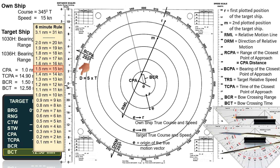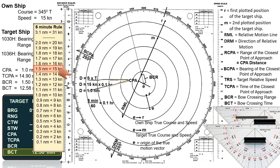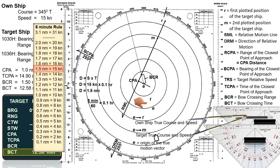Using the six-minute rule, if the ship has a speed of 15 knots, she travels a distance of 1.5 nautical miles in six minutes. You can also use the formula: distance equals speed times time. Own ship speed is 15 knots multiplied by 0.1 hours (six minutes), giving a distance of 1.5 nautical miles. The six-minute rule will be faster than doing the calculations.